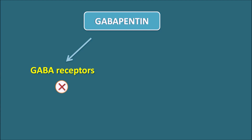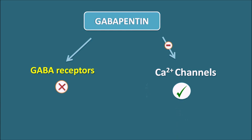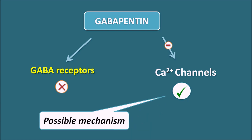Then how does Gabapentin act? It was found that Gabapentin has some affinity for calcium channels, but it does not directly block them. It blocks certain subunits on the calcium channels present on presynaptic neurons, thereby blocking calcium-mediated release of neurotransmitters. This is one possible mechanism for Gabapentin. Even so, the exact mechanism by which Gabapentin shows its anti-epileptic action is not fully clear; the blocking of calcium channels may be a possible mechanism.